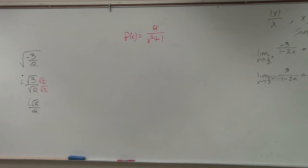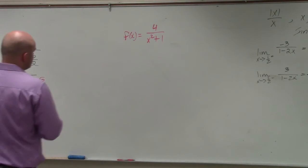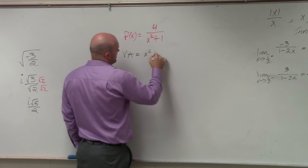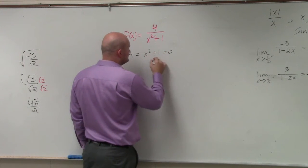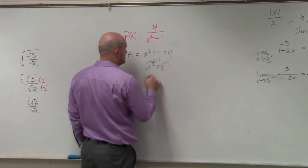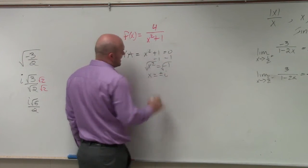Set the denominator equal to 0 and solve. So for vertical asymptotes, x squared plus 1 equals 0, x squared equals negative 1, take the square root, x equals plus or minus i.